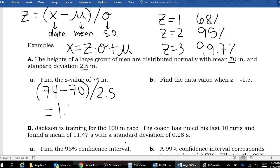We have a Z score of 1.6. So that means that the score of 74 inches is 1.6 standard deviations above the mean.